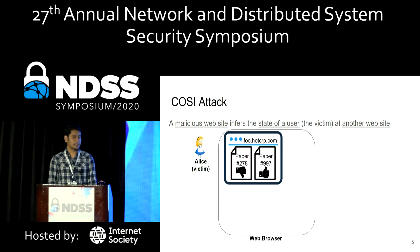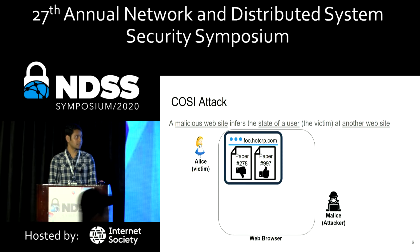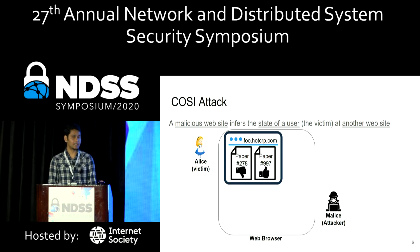Alice has been assigned some papers to review, there are paper identifiers for them, and she's in the process of reviewing them. Now let's consider the attacker, Malice, whose goal is to use COSI attacks to infer whether Alice is the reviewer of one of the papers that Malice submitted.